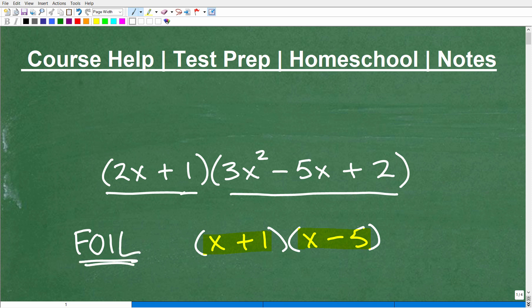And FOIL, that's an excellent little acronym. It stands for first, outer, inner, last. So I can go first, outer, inner, last. And then I can get my product here of these two binomials. But again, the FOIL method is only for two binomials.